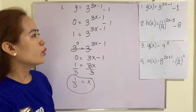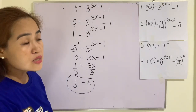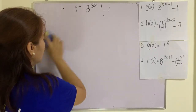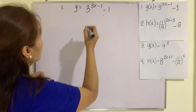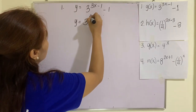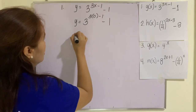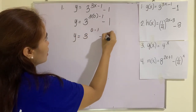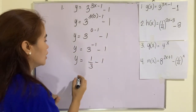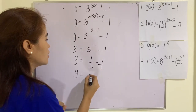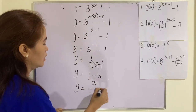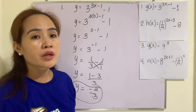Now let's find the x-intercept and the y-intercept. To find the y-intercept, set x to 0: y equals 3 raised to (3 times 0 minus 1) minus 1, so y equals 3 raised to negative 1 minus 1, which equals one-third minus 1. That gives us y equals (1 minus 3) over 3, so y equals negative 2 over 3.